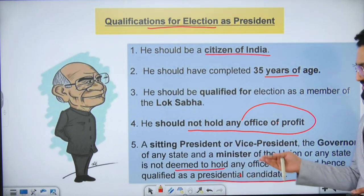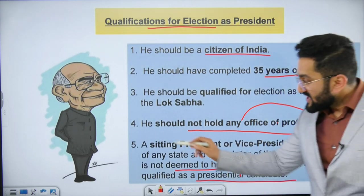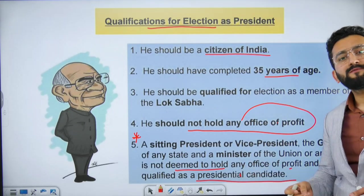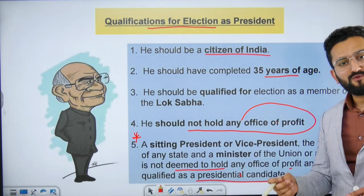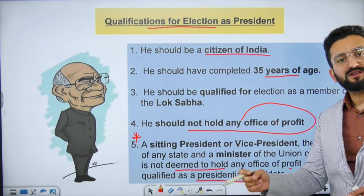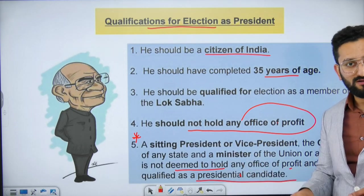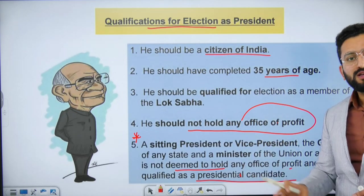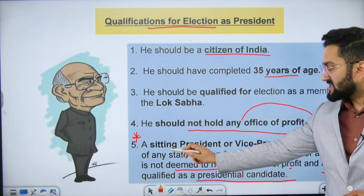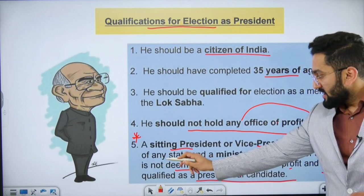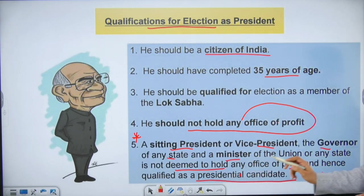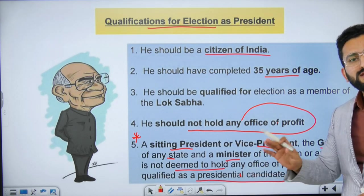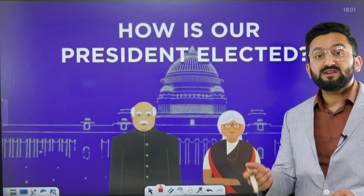This can be a scope of a UPSC question — they may ask which of the following is not considered an office of profit in the context of election of President of India. Remember: sitting President, Vice President, Governor of any state, and Minister of the Union or any state — these four are not considered office of profit.